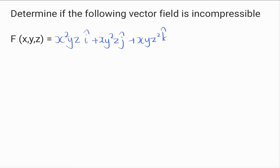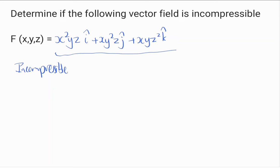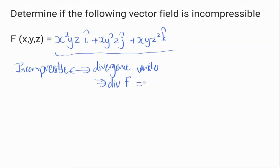Hi everyone. In this video we are going to determine if the following vector field is incompressible. A vector field is incompressible if its divergence vanishes — meaning the divergence of F is equal to zero.